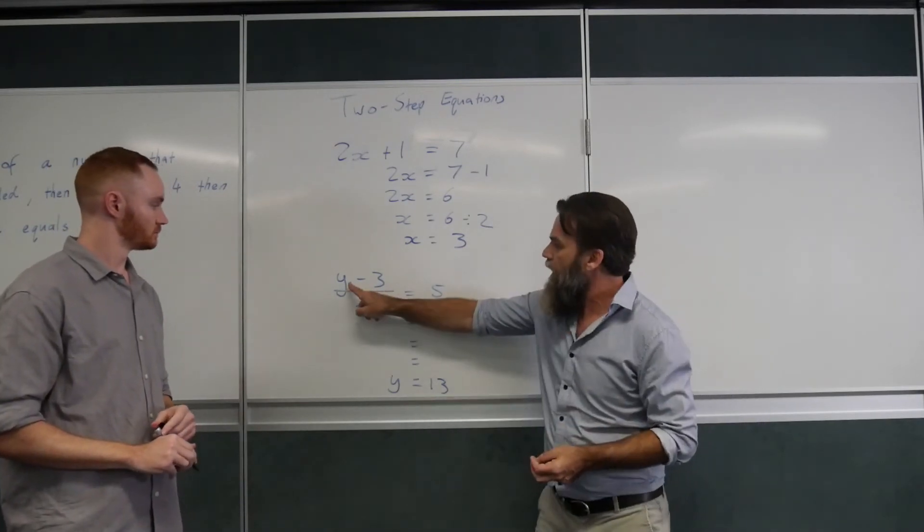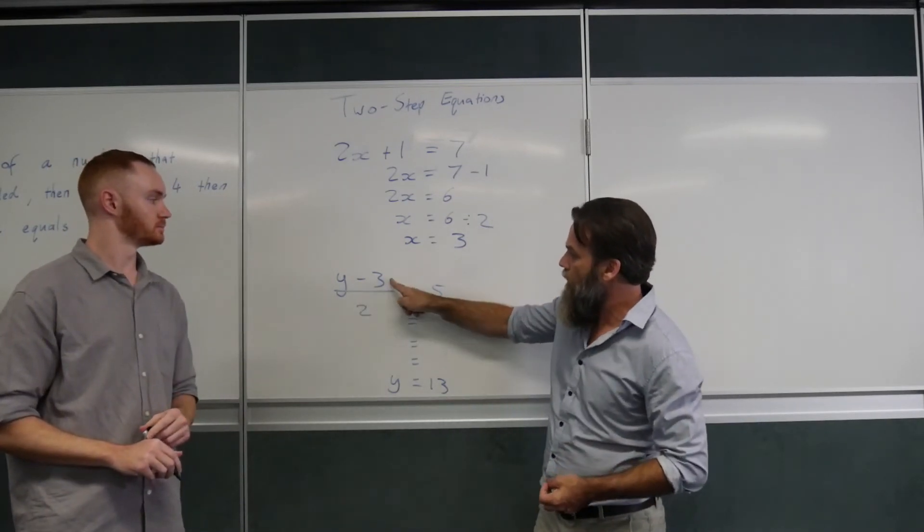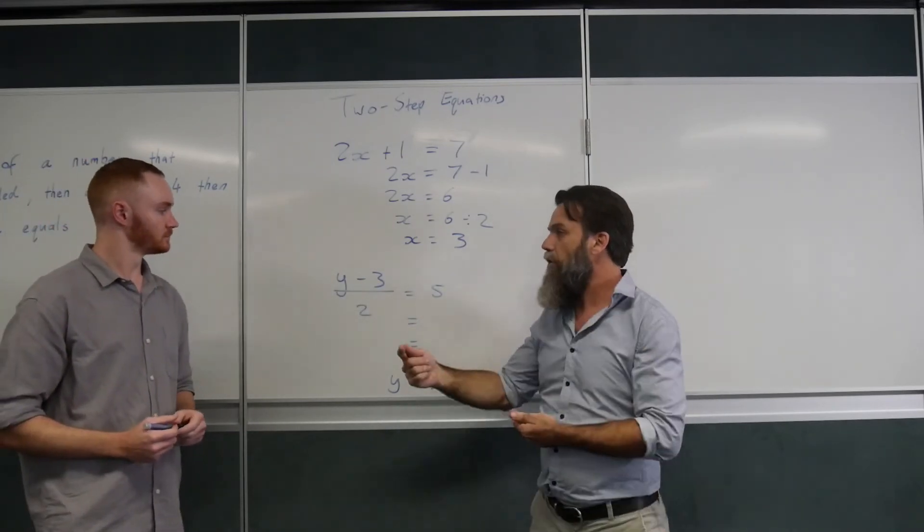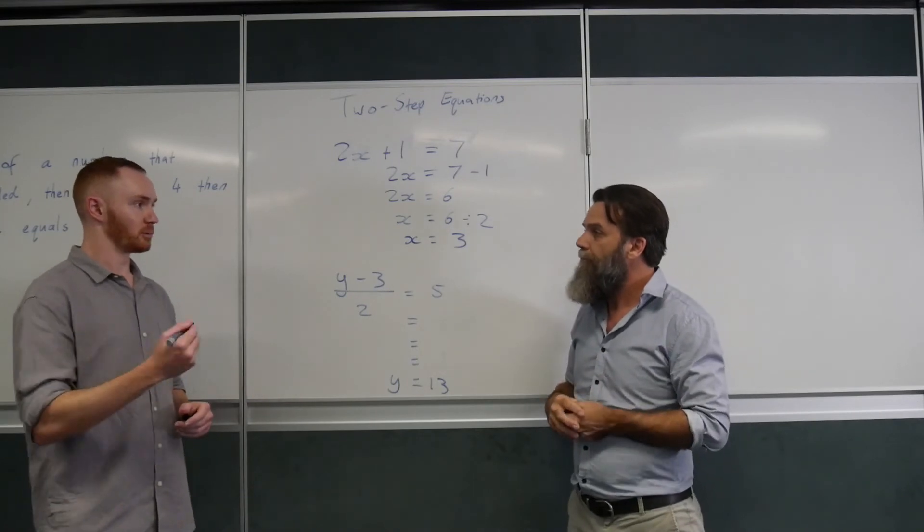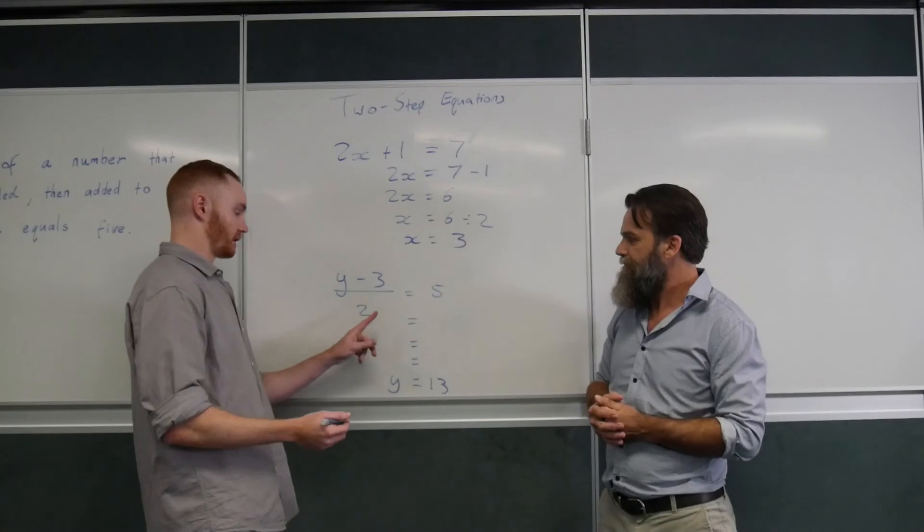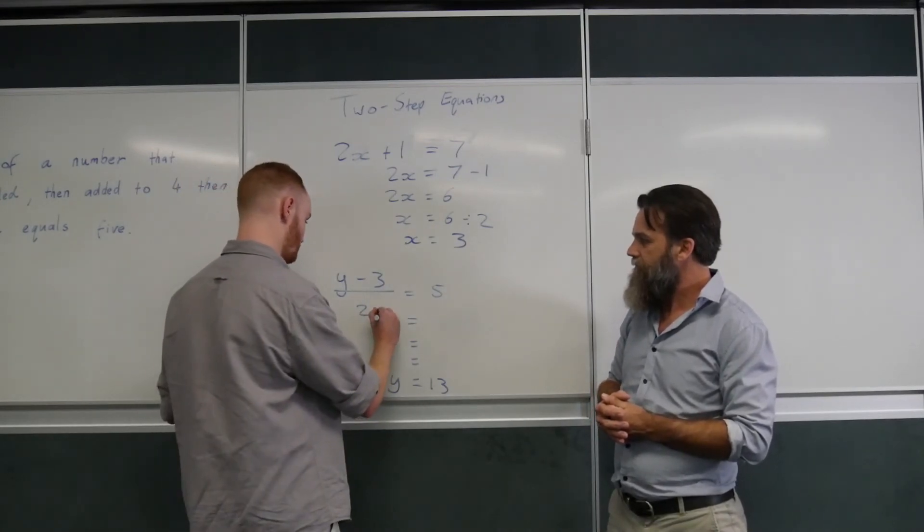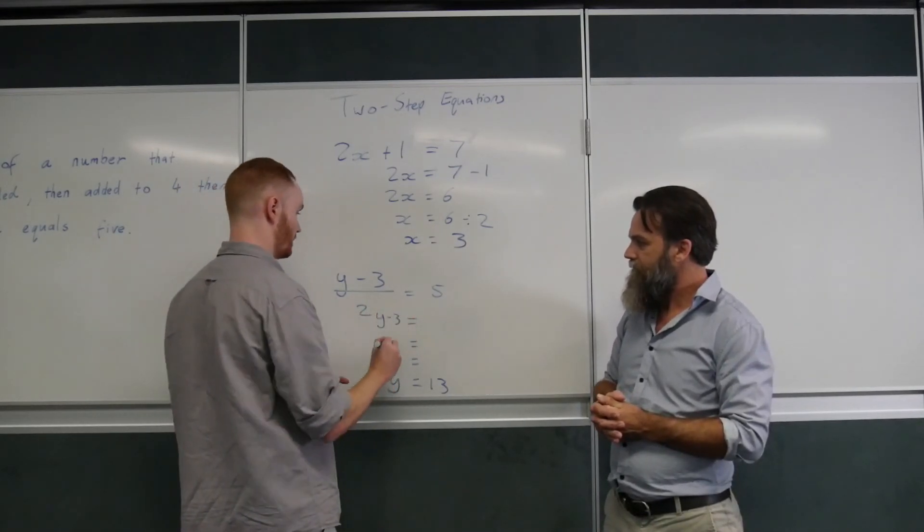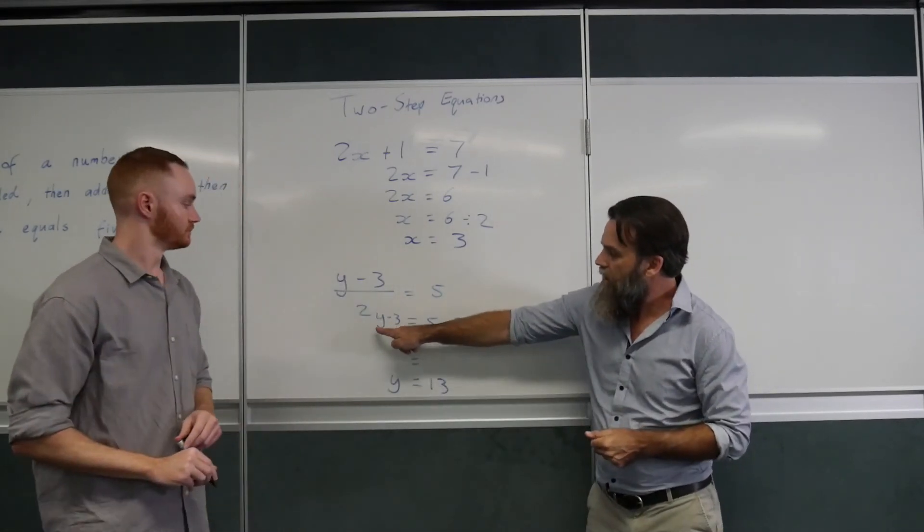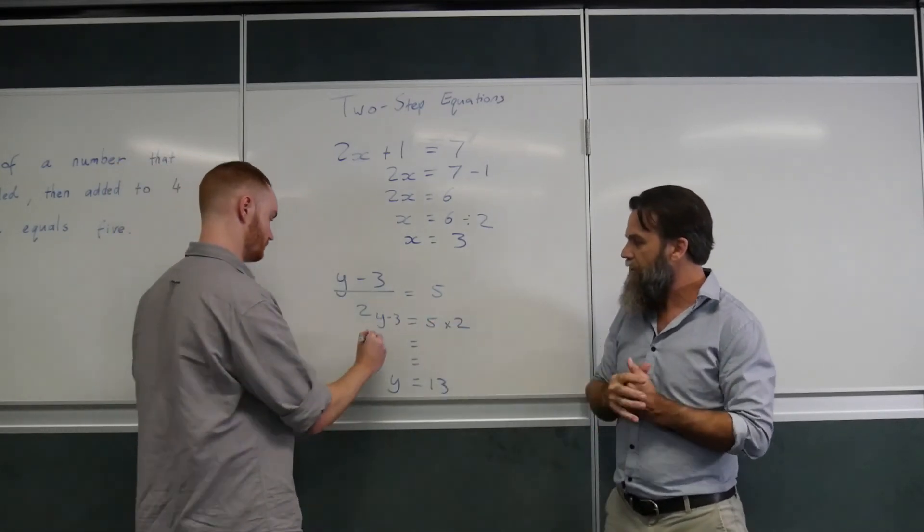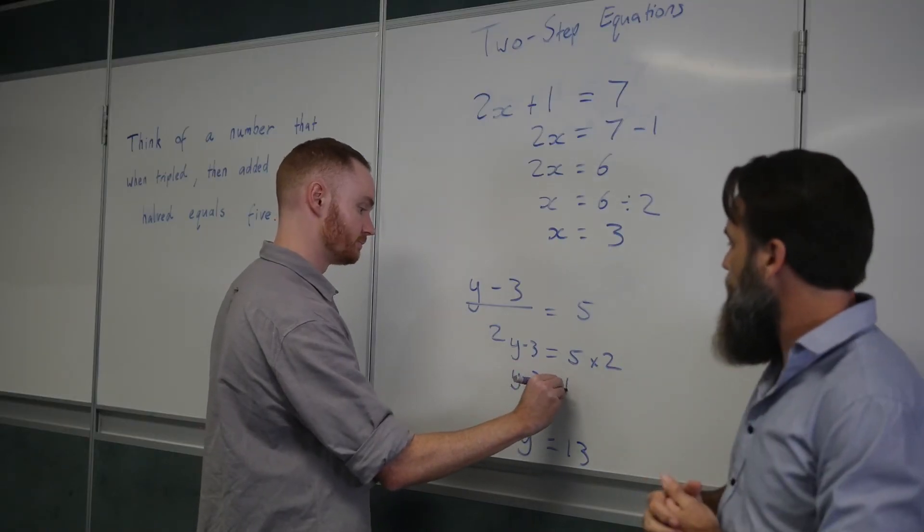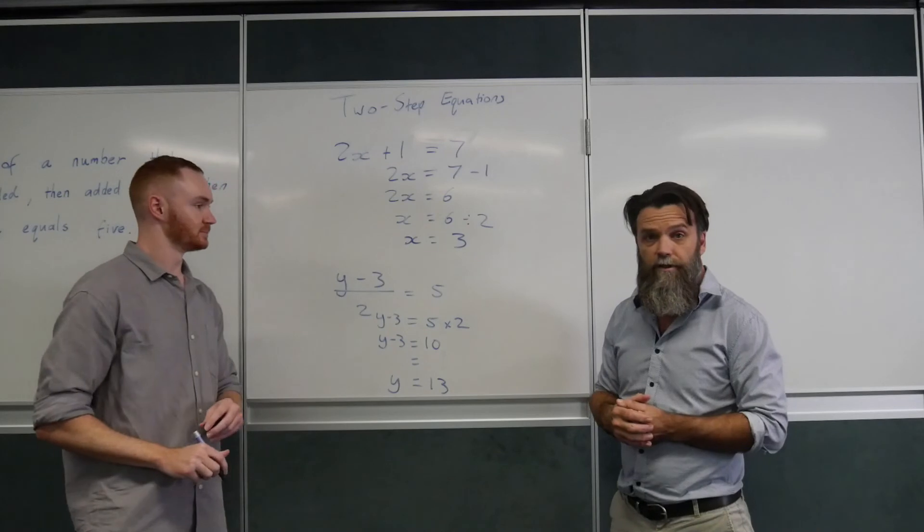The order of operations, if we knew what y is, we would minus 3, then we would divide by 2. So, reversing those operations, what's the first thing we're going to get rid of? We're going to multiply both sides by 2. Fantastic. Go ahead and do that, please. So, the left-hand side here would become y minus 3. And the right-hand side, 5 times 2. Fantastic. We can't do anything to that y minus 3 at this stage, so we drop that straight down. But we can work out 5 times 2. 10. And isn't he good at his 2 times table?